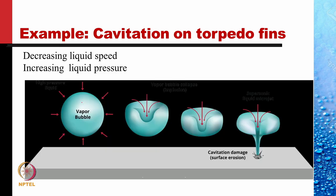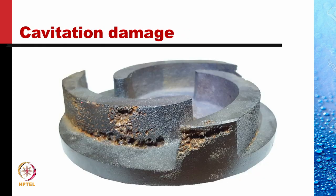This cavitation is quite harmful. When the pressure increases on the vapour bubble — that is, when the liquid speed decreases — the bubble collapses in the manner shown, and a water jet impinges on the nearby surfaces, causing surface erosion. This picture shows the cavitation damage done on the torpedo fins, and the damage is quite serious.